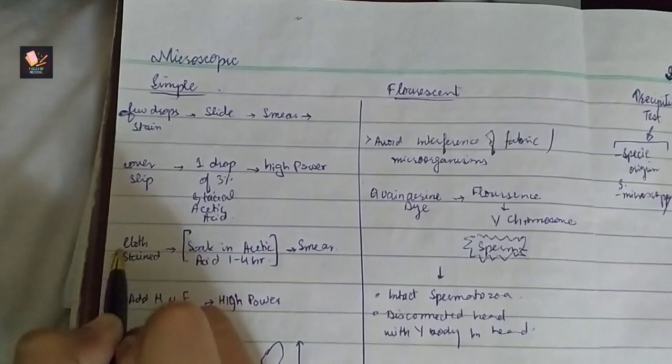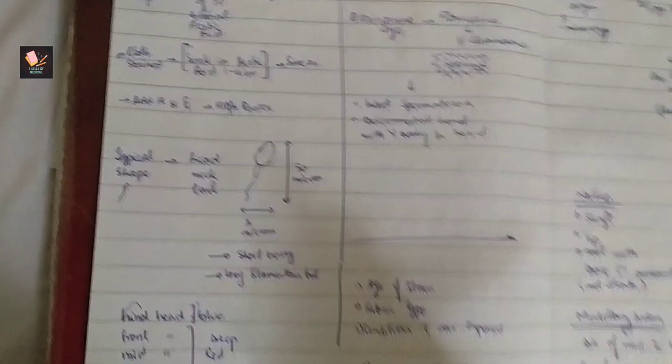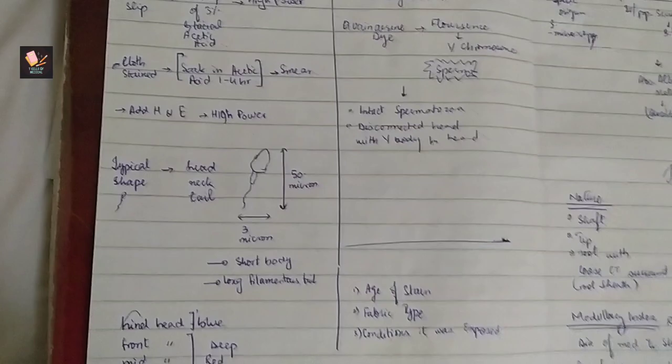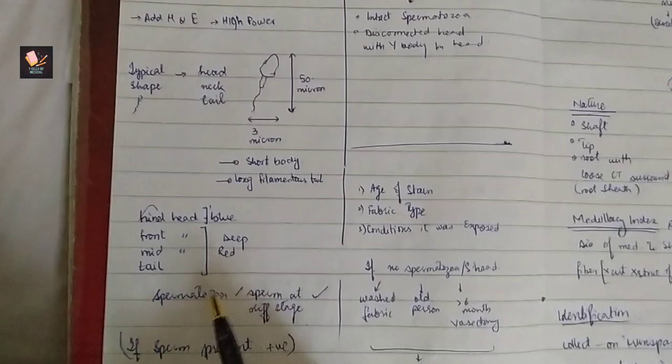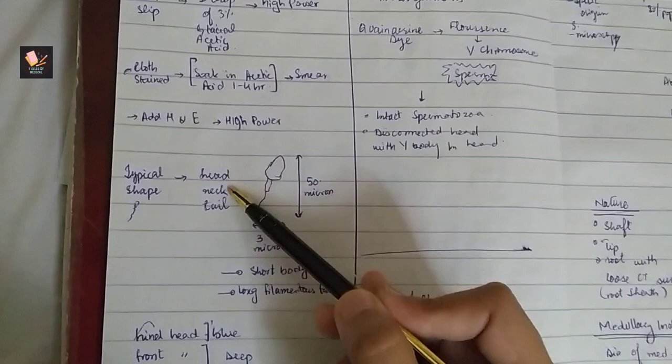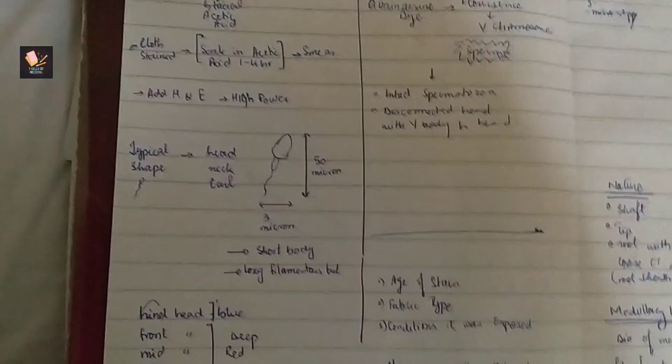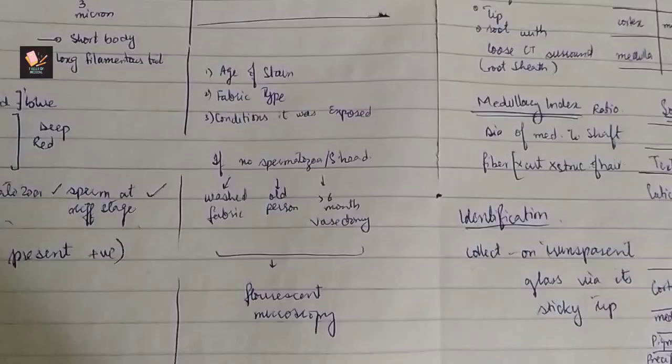Case 1 and case 2. Now you can see what will look at the microscope. First is that sperm is determined in the microscope, so it means positive. Further details are written, but simply we determine semen, it is simple. Sperm in different stages you can see: sperm head, neck and tail, length and width, long filamentous tail, and front middle part of the head is deep red.